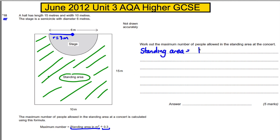The standing area is clearly the area of the rectangle subtract the area of the semicircle. The area of the rectangle is 10 multiplied by 15, and we subtract the area of the semicircle.